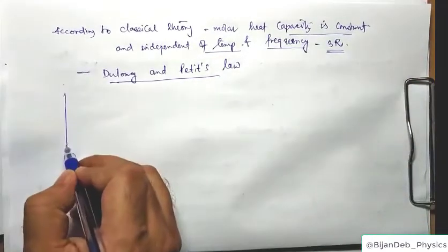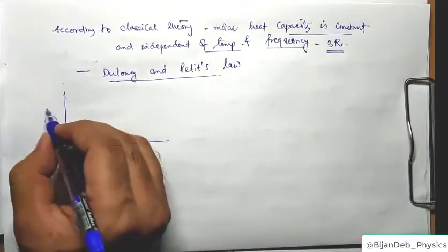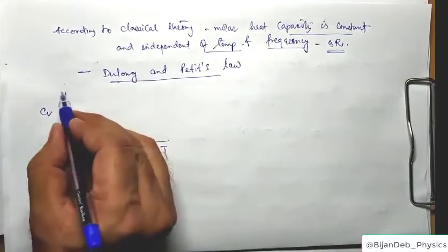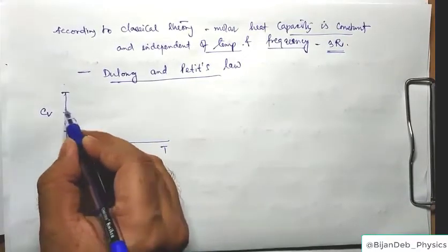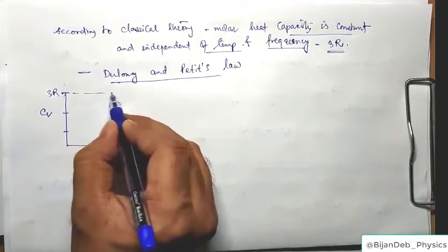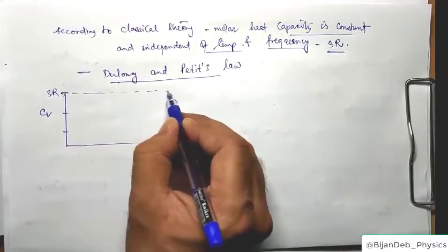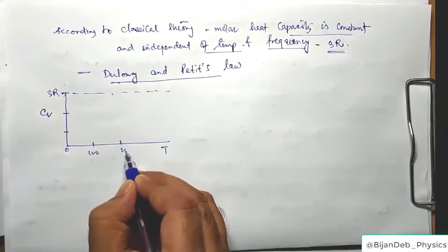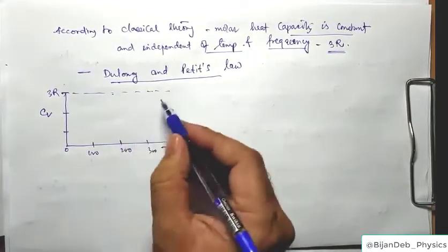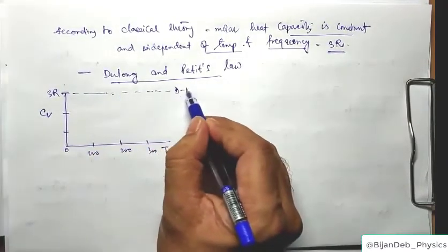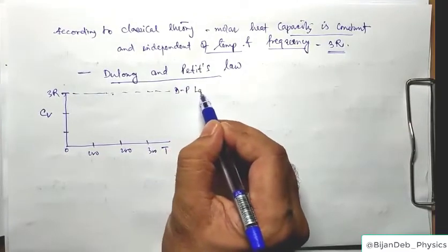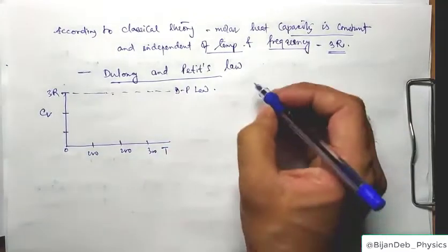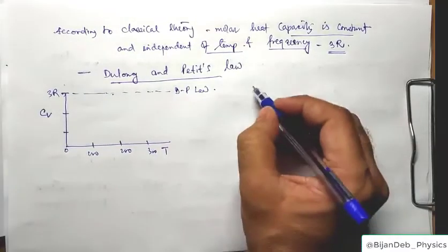If we plot Cv versus temperature, according to Dulong-Petit law the graph is a horizontal straight line at the value of 3R — constant regardless of whether temperature is 0 K, 100 K, 200 K, or 300 K.